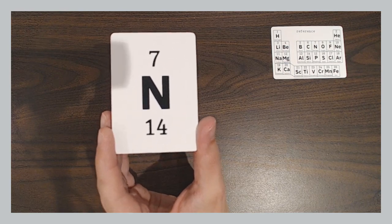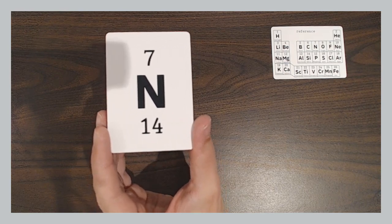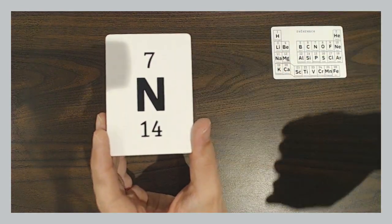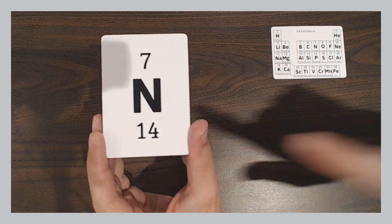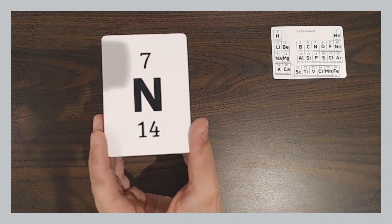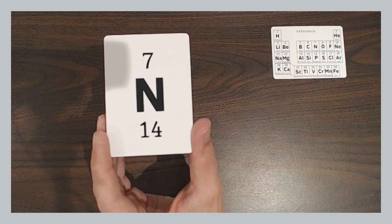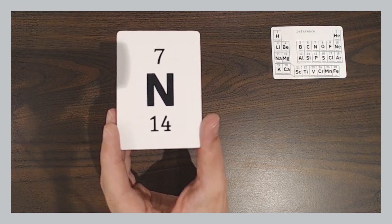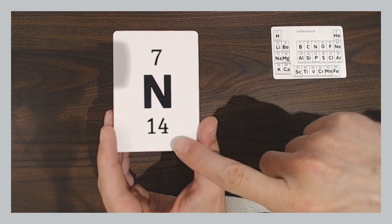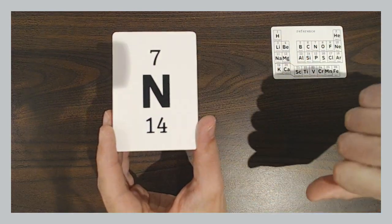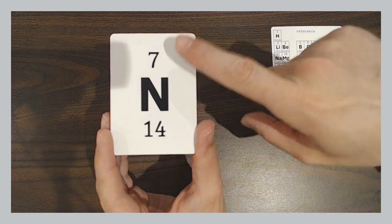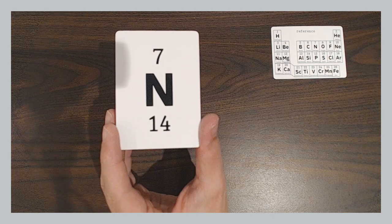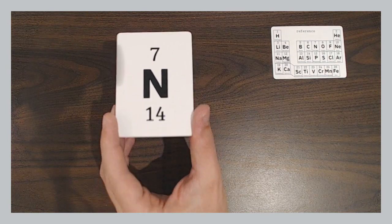Every atom has a nucleus, which is made up of protons and neutrons. The atomic number is the number of protons. The atomic mass is the sum of the protons and neutrons. So if you want to know how many neutrons the most average nitrogen would have, you would take the atomic mass and subtract the atomic number. The total atomic mass minus the number of protons. In this case, 14 minus 7 is 7. So it has 7 neutrons.